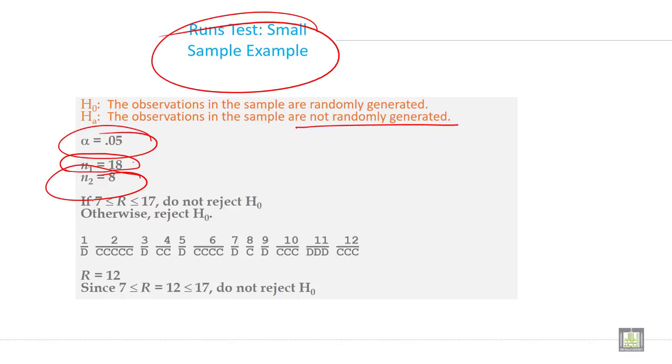The calculation shows R equals 12. Since 7 is less than R equals 12, which is less than or equal to 17, the decision is do not reject the null hypothesis.